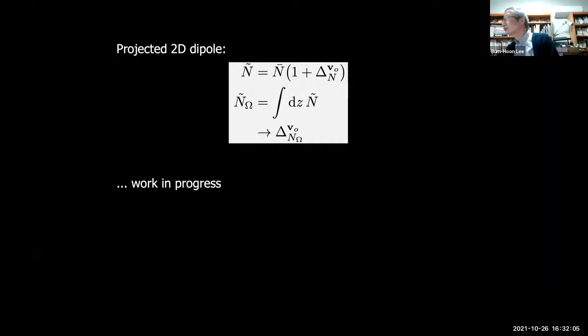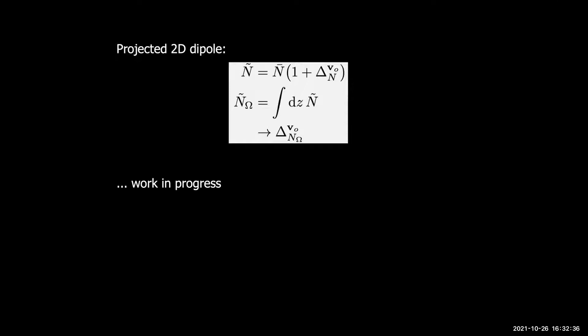A question: in the beginning everything was formulated in a very general non-perturbative way with isotropy introduced, but towards the end the formulas seemed to involve a very general spacetime — is that right?